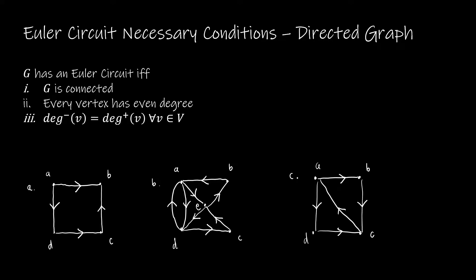Looking at directed graphs, the conditions are almost the same, but we have an additional condition: the in-degree and the out-degree must be the same for each and every vertex in the vertex set. If we look at vertex A, it has an in-degree of zero and an out-degree of two, whereas B has an in-degree of two and an out-degree of zero.